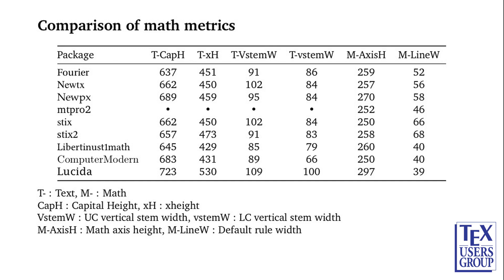Here is a quick rundown of some metric comparisons between a number of math packages. The first four columns compare the cap heights, x-heights, and vertical stem widths of the text font parts, and the last two show the math axis and the default line width. Line width data shows that Computer Modern, Lucida, and Libertinus have very fine lines; Stix has the thickest lines; and Fourier and NewTXMath are in the middle. The VSTEM data shows that Fourier has uppercase stems 10% lighter than Times and lowercase stems about the same, though it appears darker on screen because it's rather cramped. In other respects, its metrics are quite similar to Times.